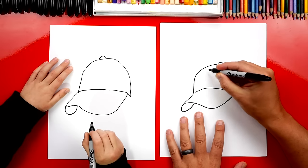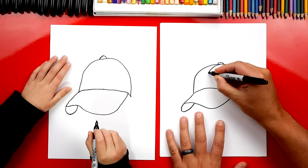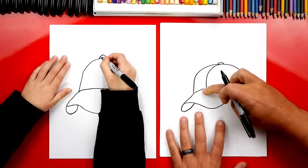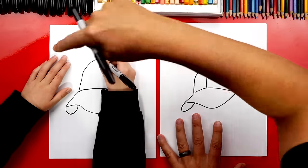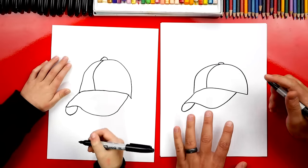Now we're gonna draw seams or little lines that go down the hat. So we're gonna draw one right down the middle. It's like this curve that matches the front of your hat. Yeah, good job.